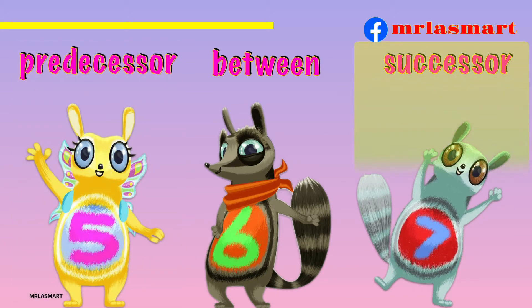And Humphdida is the successor of Flinders, or I can say, number seven is the successor of number six.